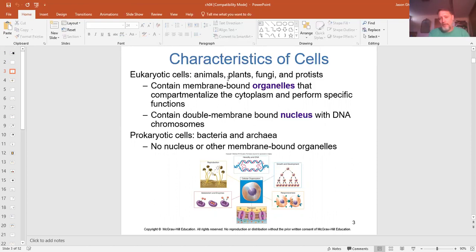Eukaryotes are animals, plants, fungi, protists, all of them from the kingdom of eukaryote. Prokaryotes are bacteria and archaea. They do not have a nucleus or any other membrane bound organelles, and they tend to be a lot smaller.